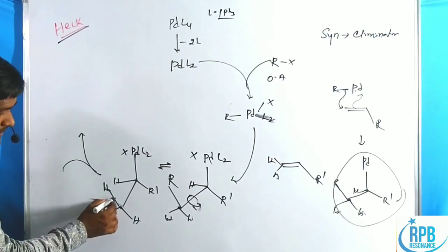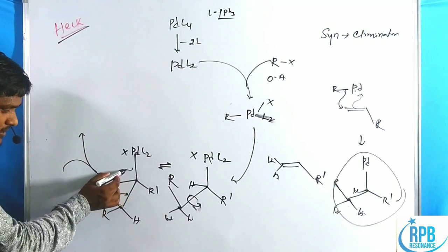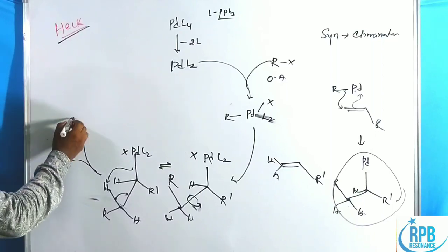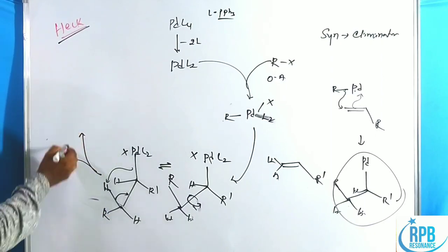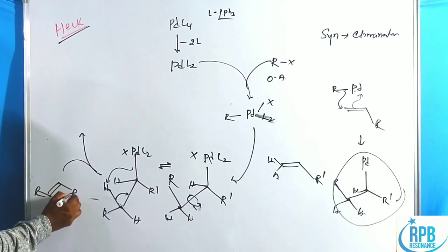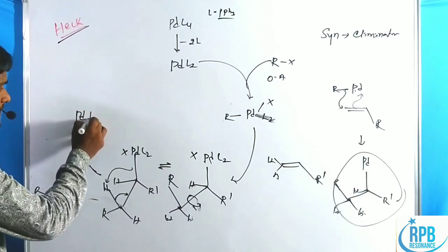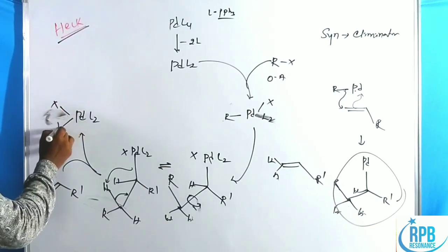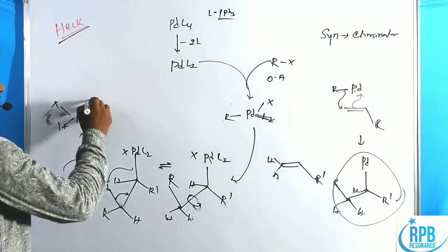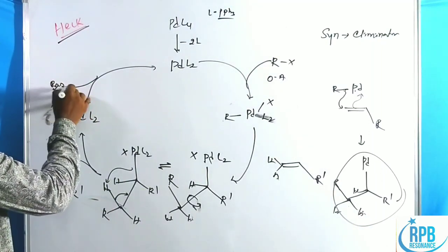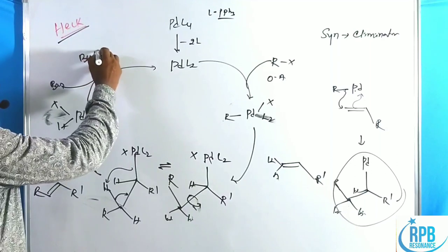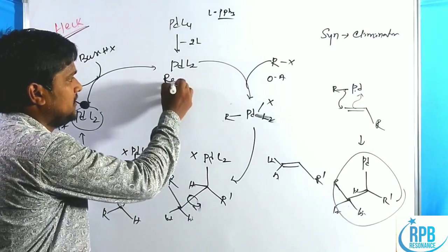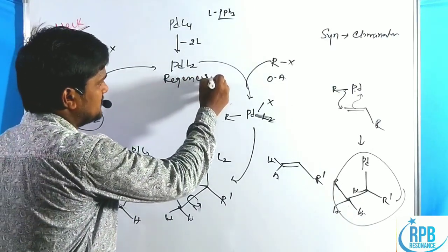The bonded electrons shift and palladium abstracts the hydrogen atom. This gives the alkene (double bond R, R') along with palladium L₂(X)(H). In the final step, the base eliminates HX, and palladium L₂ is regenerated — regeneration of the catalyst.